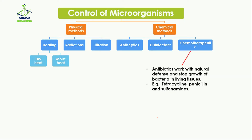Chemotherapeutics are antibiotics that work with the natural defense system and stop the growth of bacteria in living organisms. They destroy bacteria, stopping their division and growth. Some examples of antibiotics are tetracycline, penicillin, and sulfonamides. That was all about the control of microorganisms.